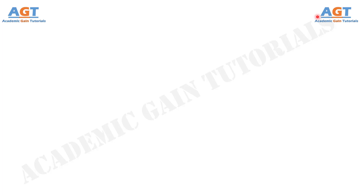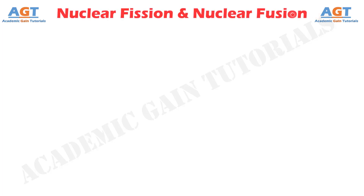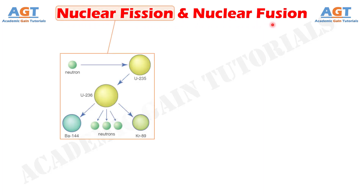Welcome to academic game tutorials. In this video, we will look into the differences between nuclear fission and nuclear fusion. Nuclear fission is one type of nuclear reaction where a heavier nucleus, when bombarded by a neutron of sufficient velocity, splits into two or more lighter nuclei and at the same time releases one or more neutrons and energy.